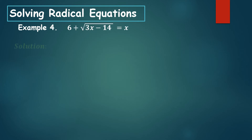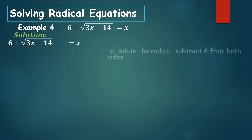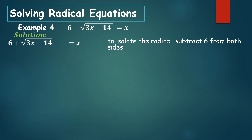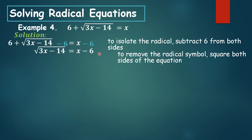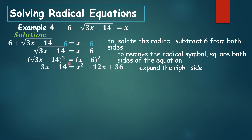Example number 4: 6 plus the square root of the difference of 3x and 14 is equal to x. To isolate the radical, subtract 6 from both sides. 6 minus 6 is 0, so at the left you have the square root of 3x minus 14, and at the right you have x minus 6. To remove the radical symbol, square both sides. Cancel the radical and exponent 2, giving 3x minus 14 at the left, and squaring x minus 6 gives x squared minus 12x plus 36.